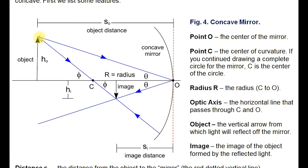How does this work? One ray goes to the center of curvature C — since any ray from C hits the mirror along the normal, the angle of incidence is zero, so it bounces straight back. The other ray hits the center of the mirror, where the angle of incidence equals the angle of reflection. Where these two rays cross is where the image tip is. Feet on the ground, so I draw from the feet on the axis up to the head — and that gives an upside-down, real image, because the light really goes there.